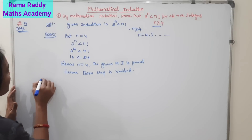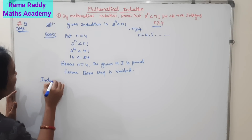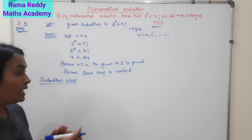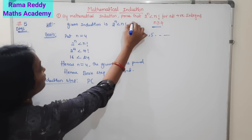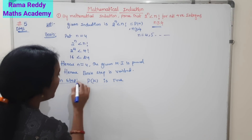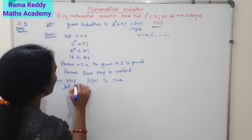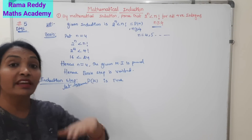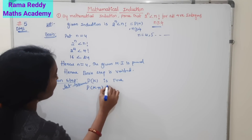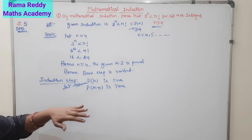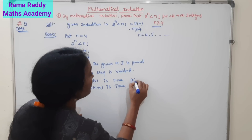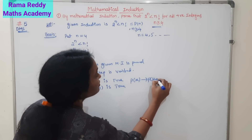Now go for the inductive step. In the inductive step, we assume P of k is true. Let us assume P of k is true. Then what we have to show is P of k plus 1 is true. If P of k is true, we have to show that P of k plus 1 is true.